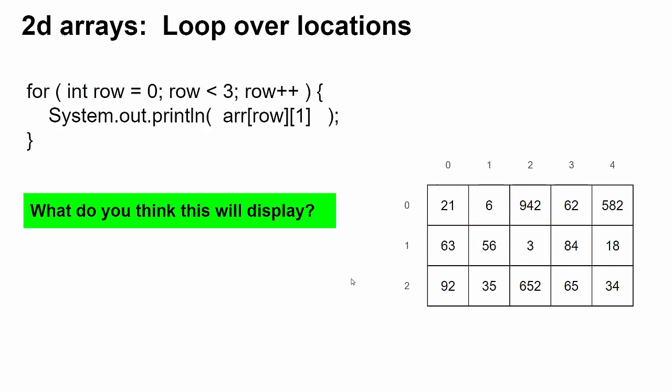In array lists, you saw how you can use a variable inside a for loop to loop over lots of location numbers to visit all the things in the list. So think about what this one would do.